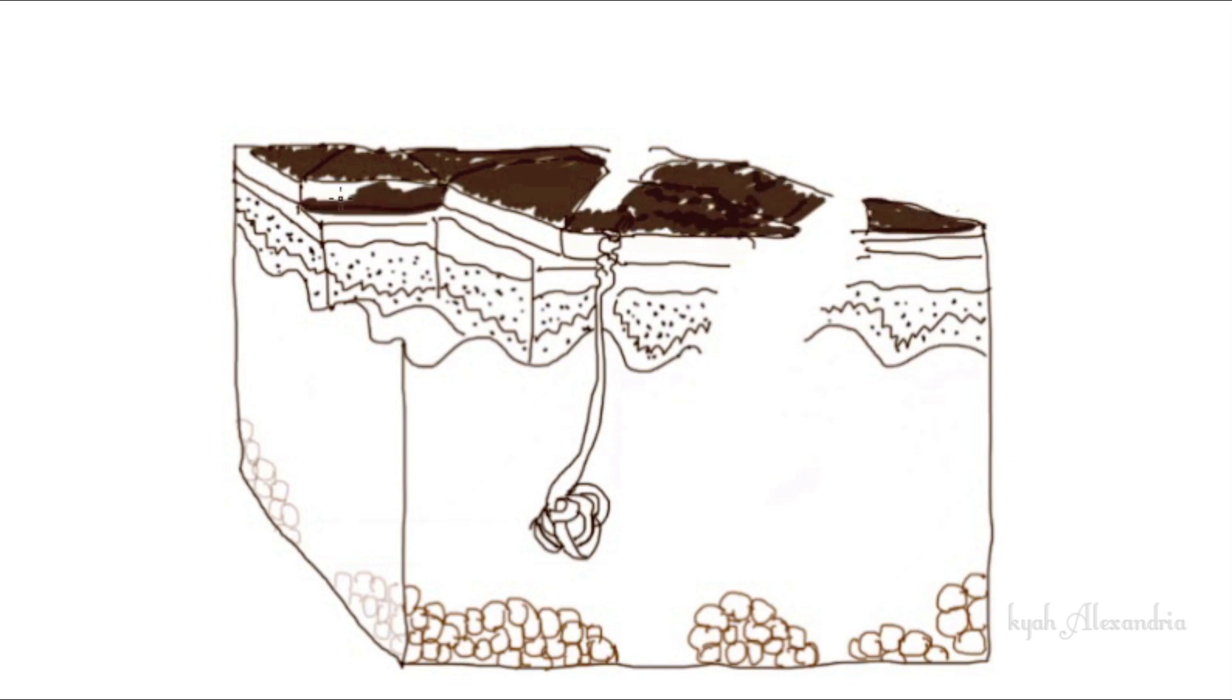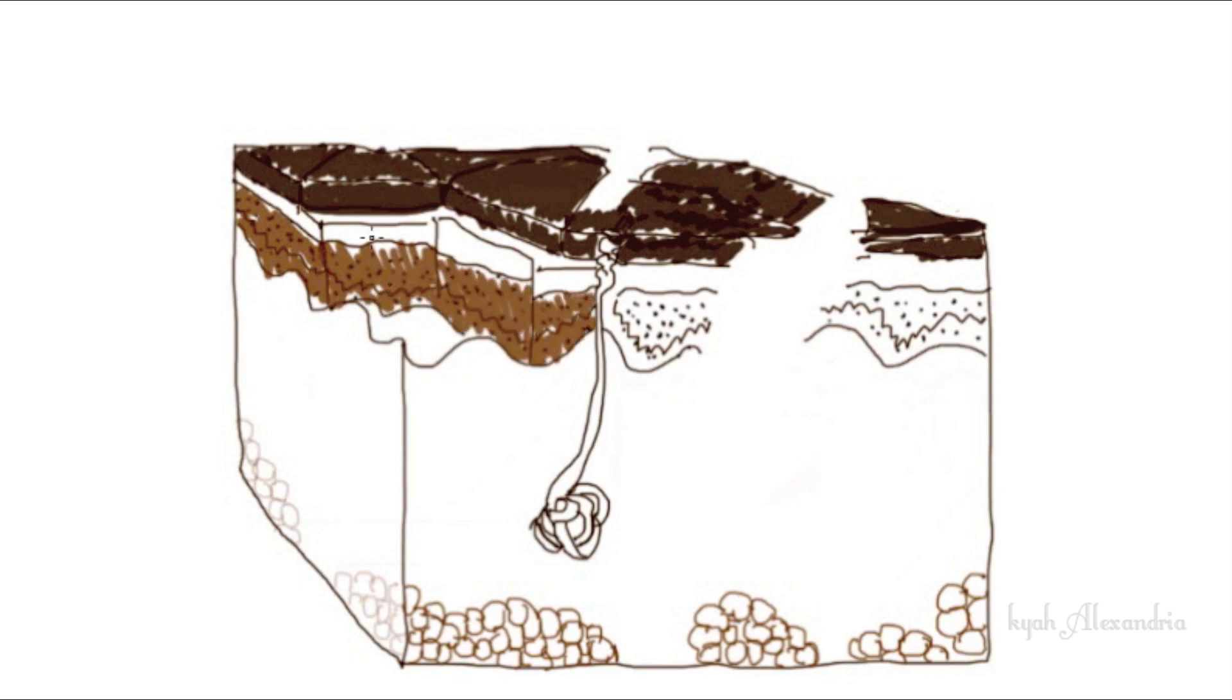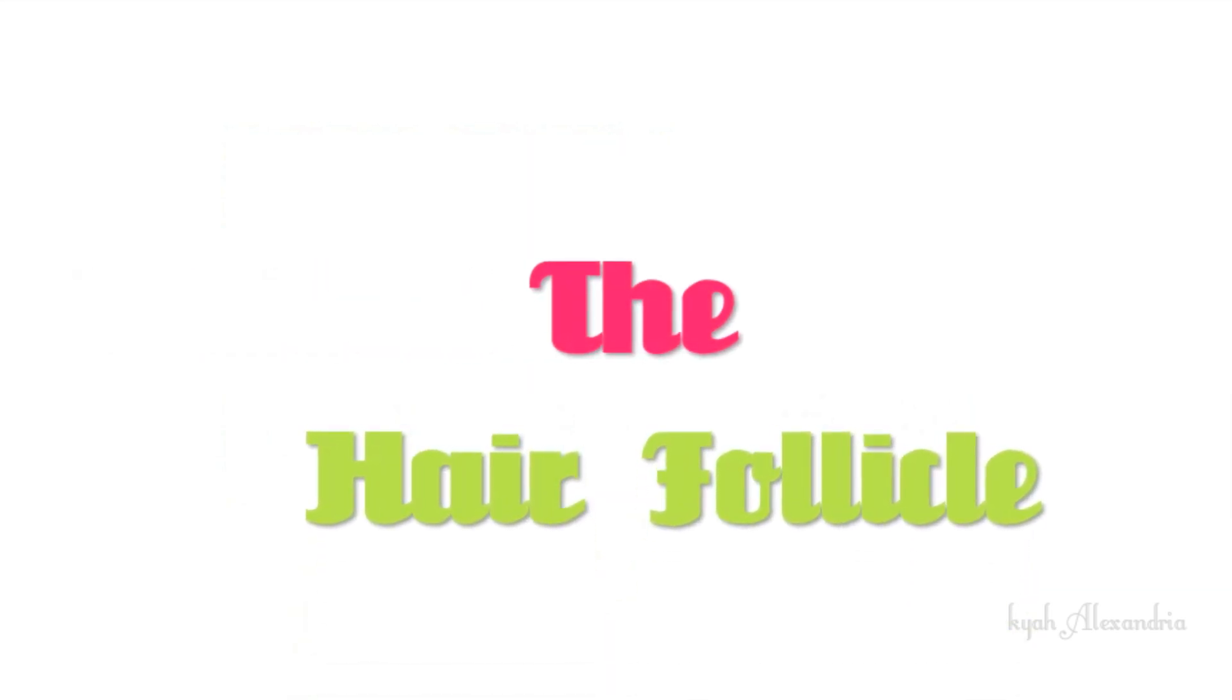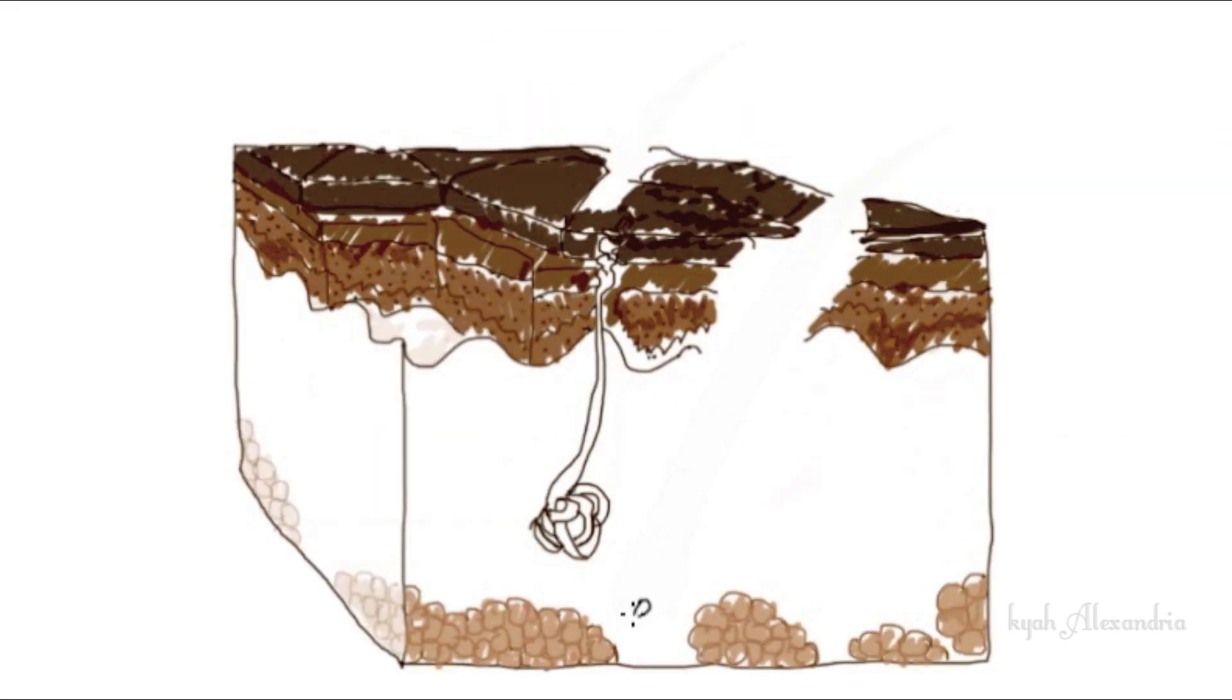Hair has two separate structures: the hair follicle, which is within the skin, and the hair shaft, the actual structure which we see that's above the scalp.